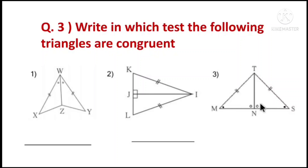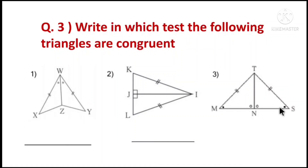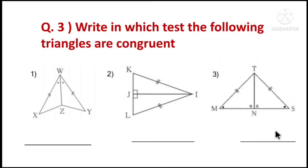Third part: In this question we have two angles and a side. This is angle, angle, side — meaning Side-Angle-Angle (SAA). Both triangles satisfy the SAA test, so the triangles are congruent by the SAA test.